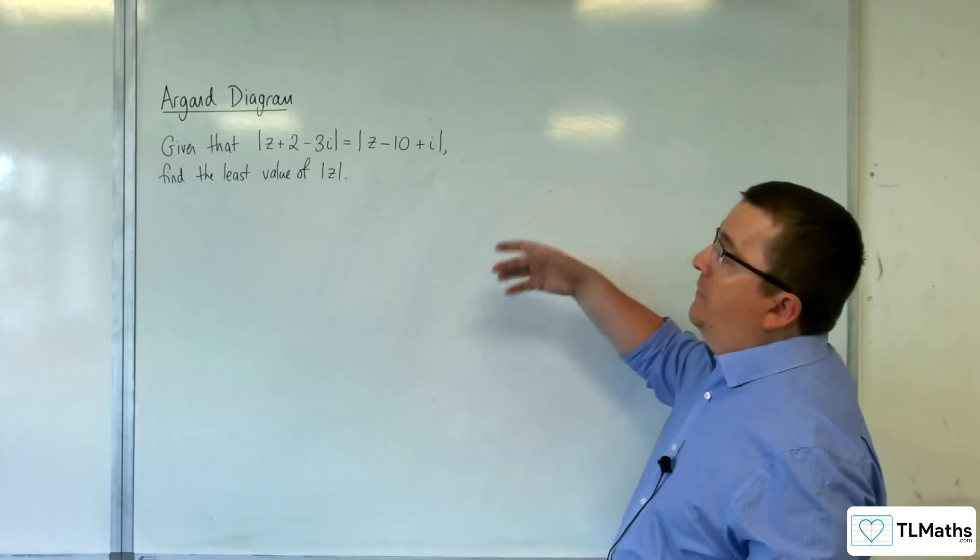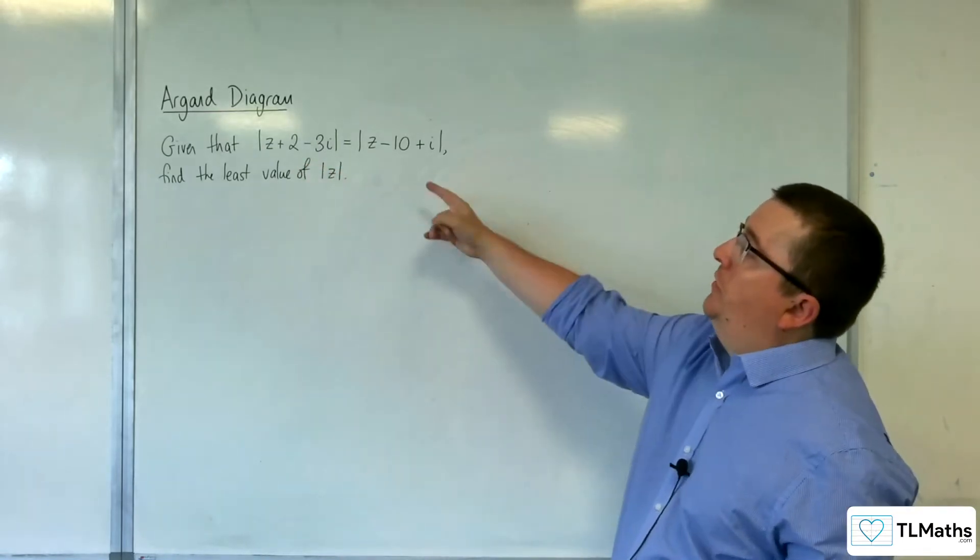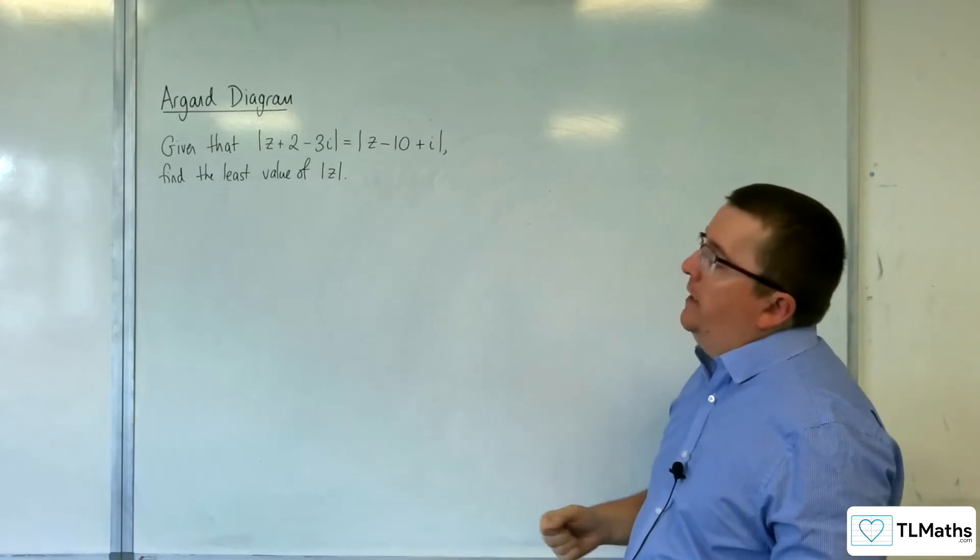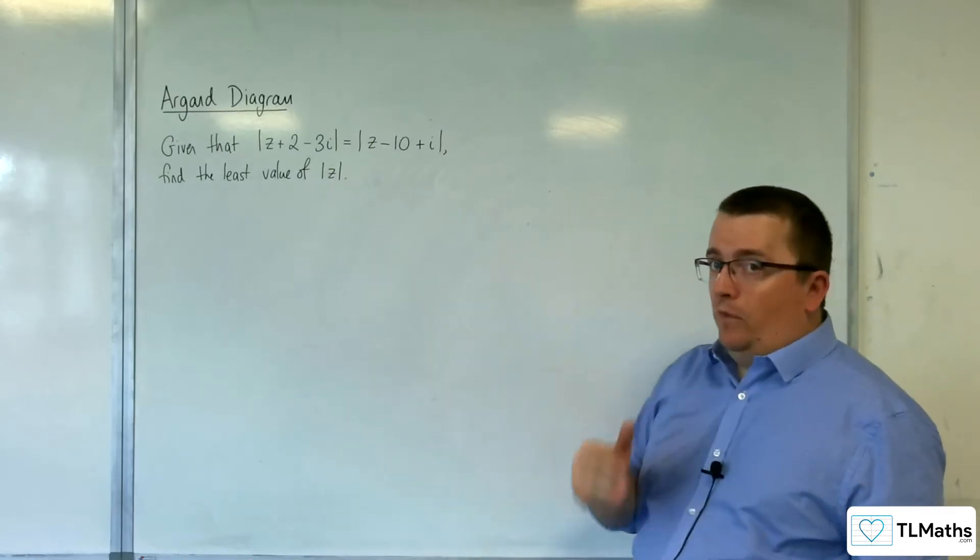In this problem, we've been given that the modulus of z plus 2 take away 3i is equal to the modulus of z take away 10 plus i. We need to find the least value of mod z.